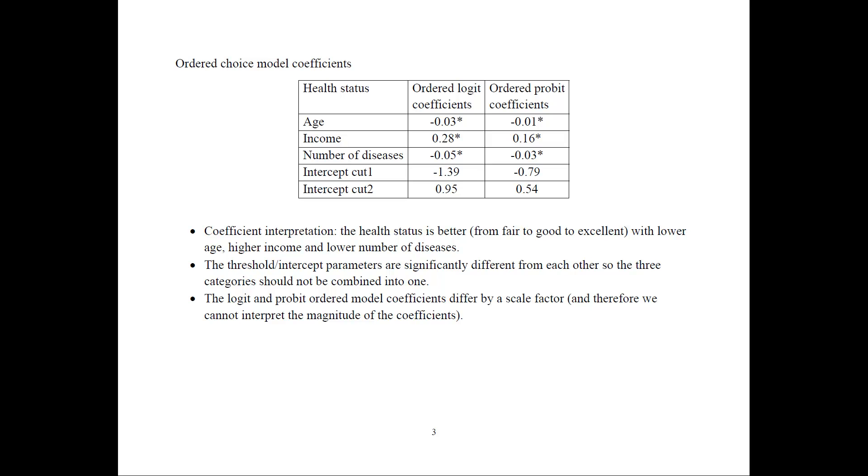Typically, software can also estimate if these intercepts are significantly different from each other. If they are, then the three categories should not be combined into one. So this is a case where in your own data, if you have, say, ten categories, it would be very hard for the model to distinguish between these categories and find any significant results for your independent variables.